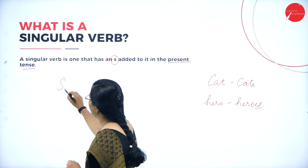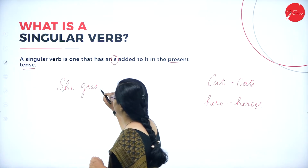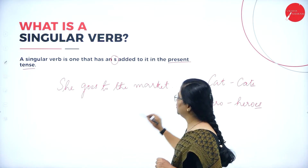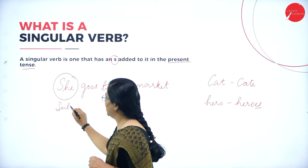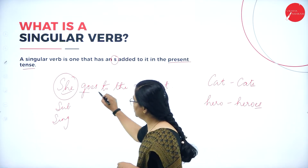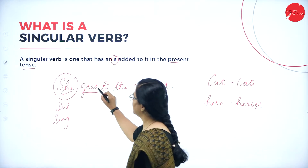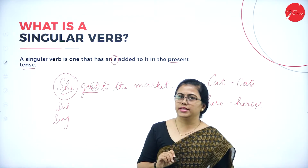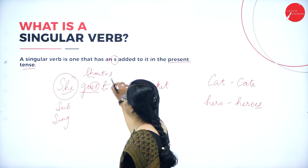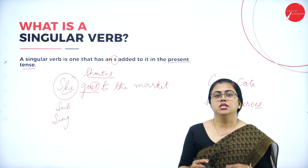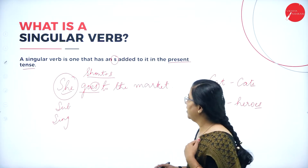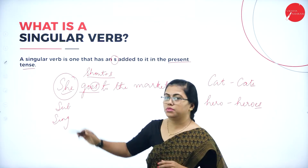For example: 'She goes to the market.' Here 'she' is the subject and it is singular. Since the subject is singular, I use a verb that is also singular. Sometimes you add only 's,' sometimes 'es.' For the word 'shout,' you can just add 's' to make it a singular verb. In plural nouns, adding 's' makes it plural — but in verbs, adding 's' makes it a singular verb.